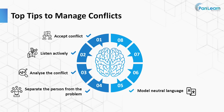Model Neutral Language. When people are in conflict, they use inflammatory language such as profanity, name-calling, and exaggerations that escalate the conflict. Restate inflammatory language in a more objective way to help make the information less emotionally laden and more useful for future discussions.